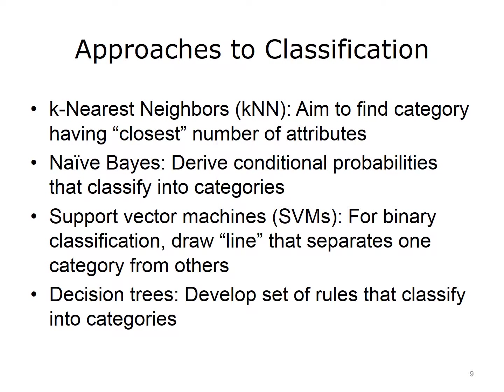There are a number of approaches used in machine learning for classification. Some of the most common algorithms are described here in a general sense. One common approach is K-nearest Neighbors, or KNN, where we aim to find categories by determining the closest number of attributes as calculated via a distance measure, then classify data into categories by how closely they fit. Another approach is Naive Bayes, which uses Bayes' theorem to derive conditional probabilities that classify according to categories. Another common approach is Support Vector Machines, or SVMs, used for binary classification, where we model a line through the data that separates one category from the other using vector mathematics. Finally, there are Decision Trees, where we develop a set of rules to work through a decision tree to classify elements into categories.